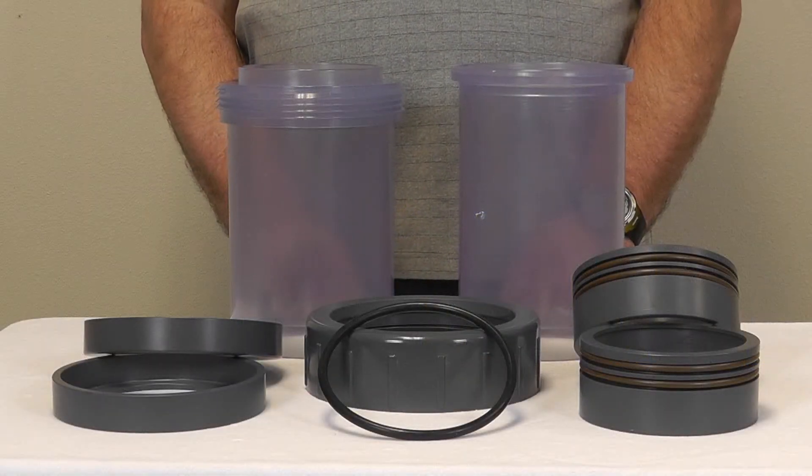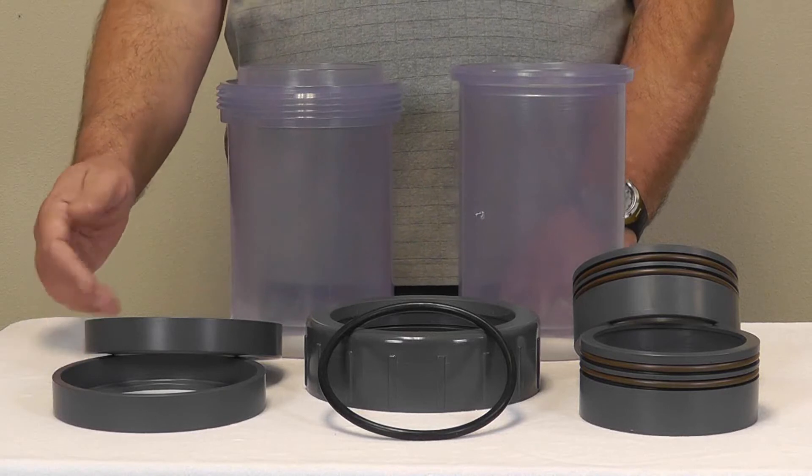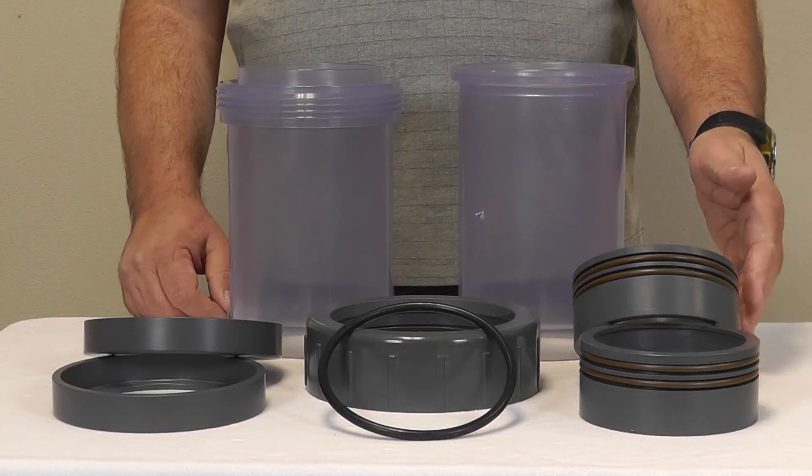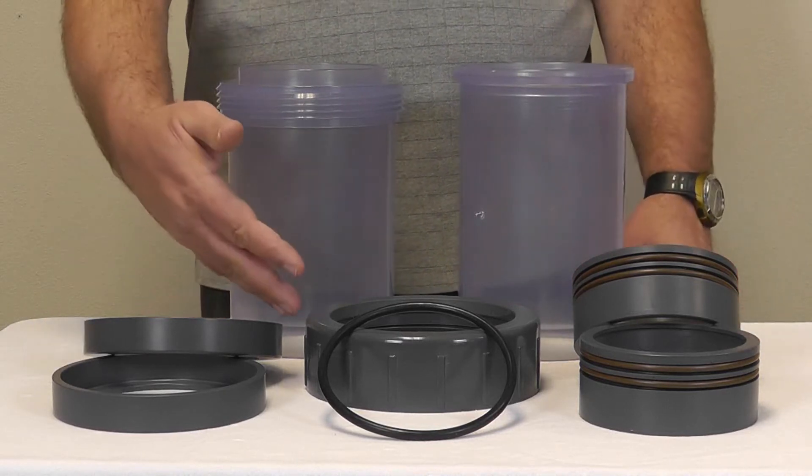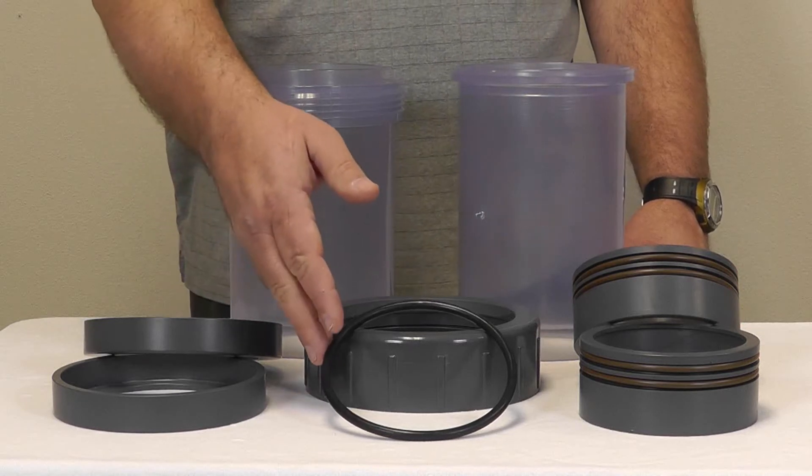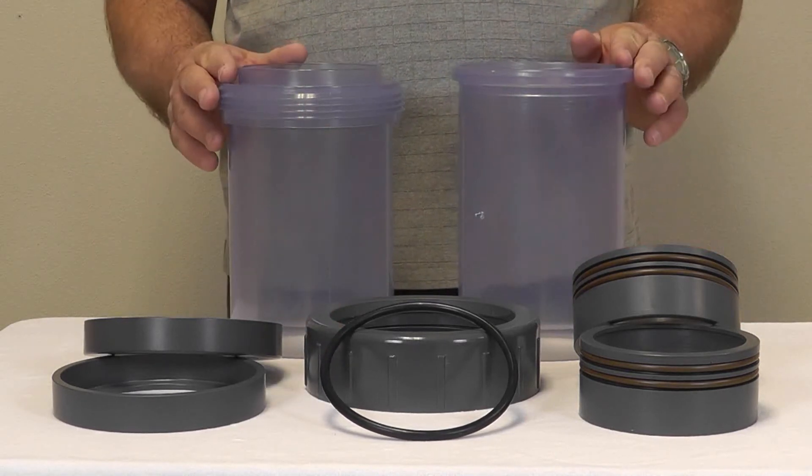The double containment union closure fitting consists of two end caps, two seal carriers with O-rings, one union nut, a union O-ring, and two body halves.